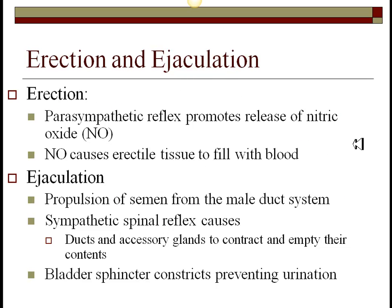An erection is a parasympathetic process — the calm-down side of the nervous system. It's driven by the release of nitric oxide, which causes vasodilation. The little blue pill, Viagra, acts on nitric oxide levels — increasing those levels causes erections. Ejaculation, on the other hand, is run by the sympathetic nervous system, which causes all the ducts, accessory glands, and muscles to contract at once and expel the semen.